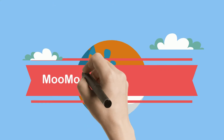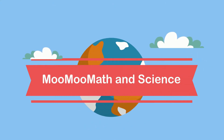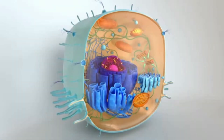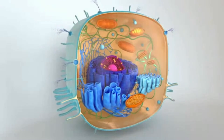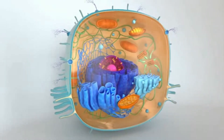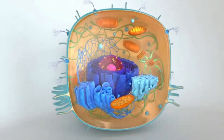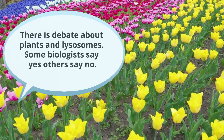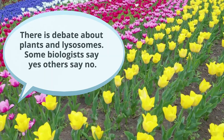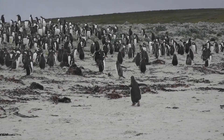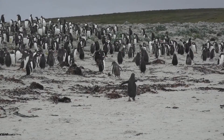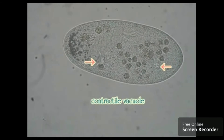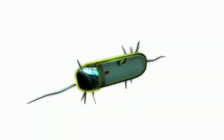Welcome to Moo Moo Math and Science and the Properties of a Lysosome. Lysosomes are organelles found inside eukaryotic cells like plants, animals, and protists, but not in prokaryotic cells like bacteria.